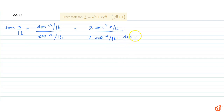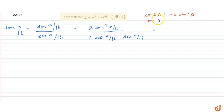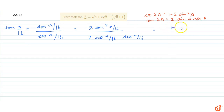Now using the formula for cos 2a, which equals 1 minus 2 sin²a in the numerator term, and sin 2a which equals 2 sin a cos a in the denominator term, we get the numerator as 1 minus cos(π/8), divided by sin(π/8).